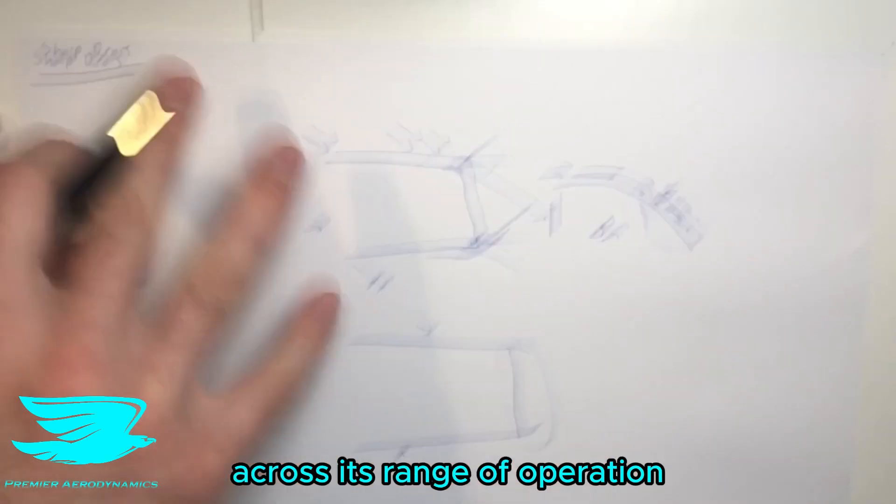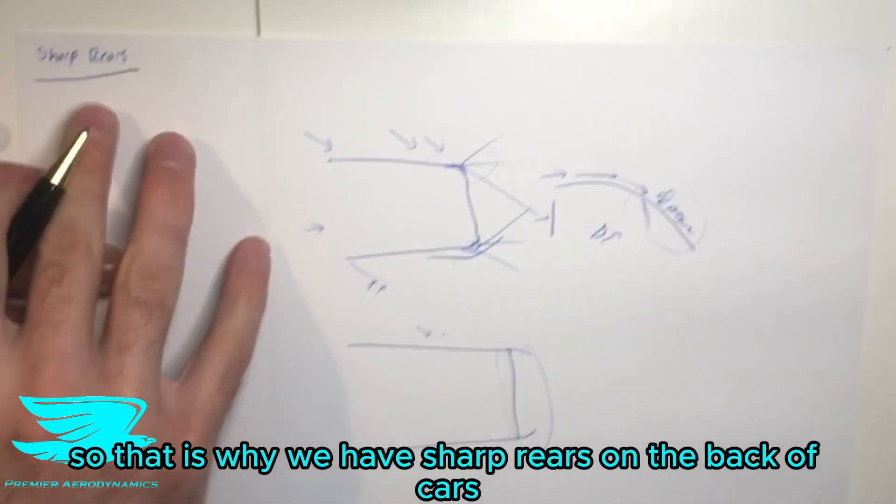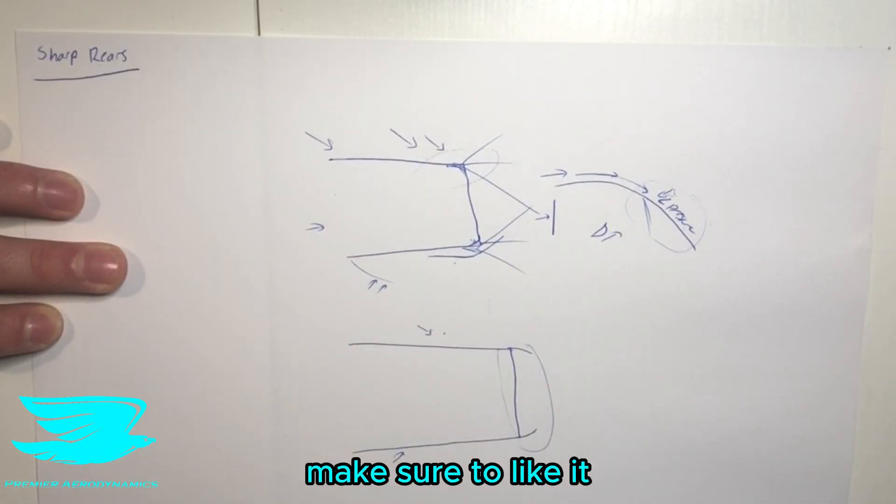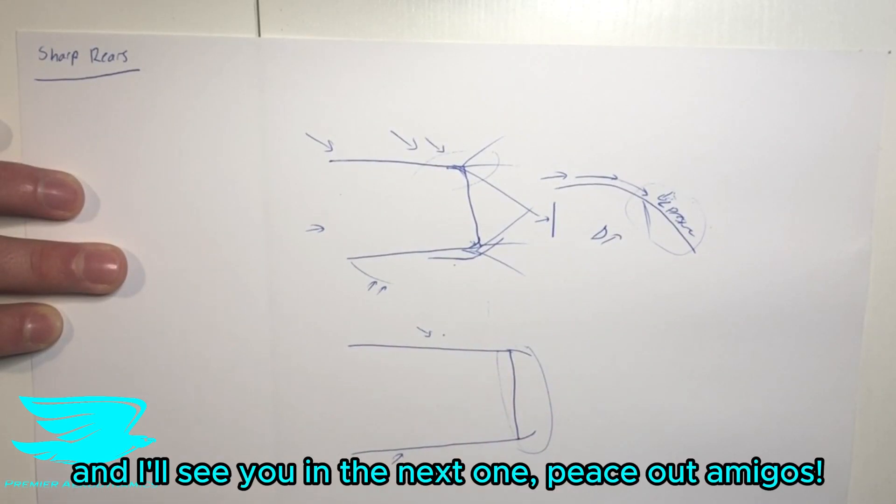As we mentioned, these sharper surfaces, these sharper corners, make the car much more stable across its range of operation. So that is why we have sharp rears on the back of a car. If you like this video, make sure to like it and click the subscribe button, and I'll see you in the next video. Peace, amigos.